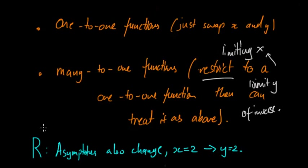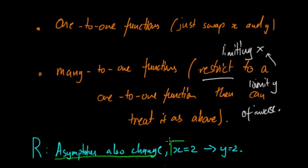Also, a quick note: remember that asymptotes also change, and this is a common error people forget. If f(x) has a vertical asymptote at x = 2, then because x and y are swapped in the inverse, the new asymptote becomes the horizontal asymptote y = 2.